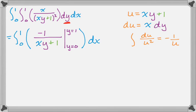So we get that. Now we're going to plug in y equals 1. So that's 0 to 1. So y equals 1 gives me negative 1 over x plus 1. And then it's minus. Now I'm going to plug in 0. So I get negative 1 over 1. So minus 1. And it's dx.